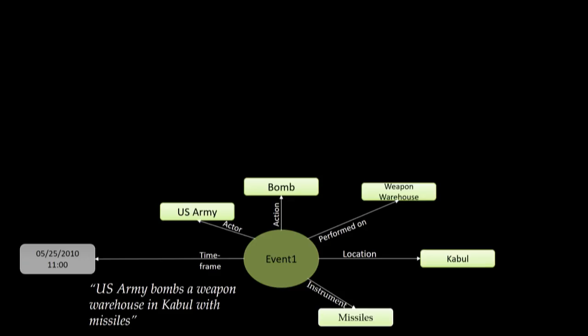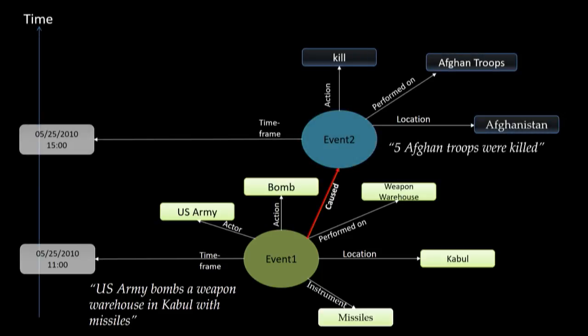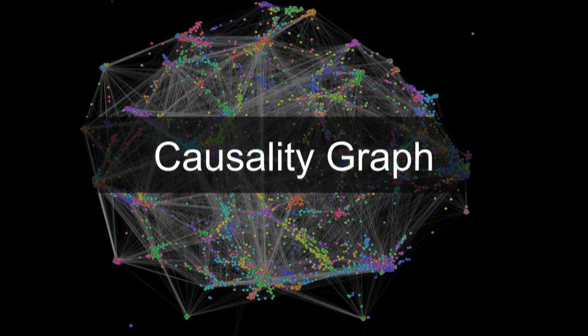It worked in the following way: it would receive articles from the news — for example, 'US Army bombs a weapon warehouse in Kabul with missiles' — and apply deep natural language processing on top of it to identify the actor, the action, the location, and the instrument. Then it would look for patterns where people actually wrote 'this causes that' or 'that happens after.' In this case, this event was identified to cause five Afghan troop casualties.